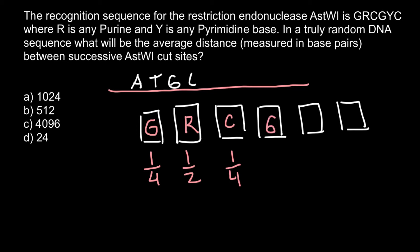Then guanine, one quarter. And then Y stands for pyrimidine, or two bases out of four, or one half. And the last one would be cytosine, and cytosine would have one out of four probability.